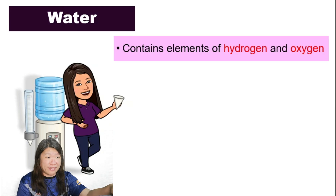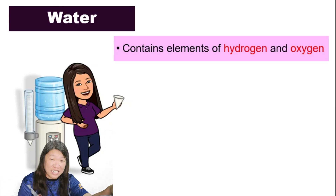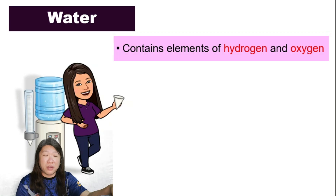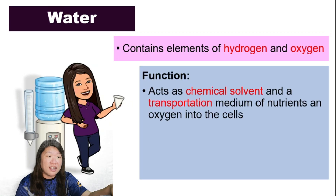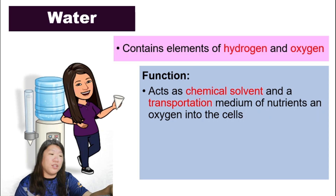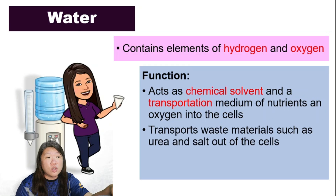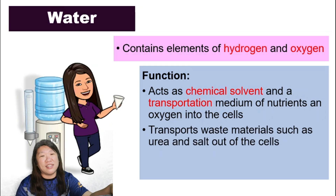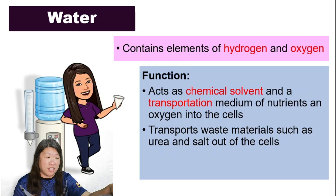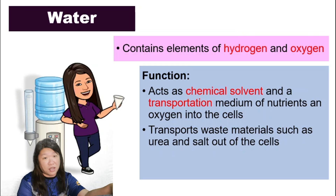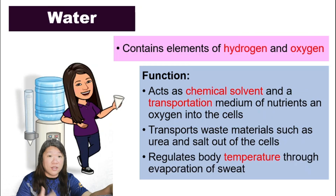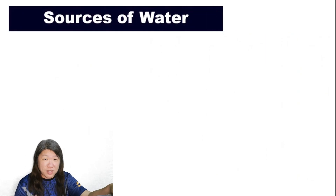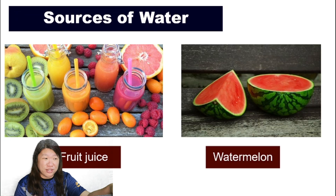Next, let us look at water. Water contains hydrogen and oxygen — H₂O. Its function: it acts as a chemical solvent and transportation medium for nutrients and oxygen into the cells, and it also transports waste materials such as urea out of the cell. Besides that, it regulates our body temperature through the evaporation of sweat. Sources of water include fruit juice and watermelon.